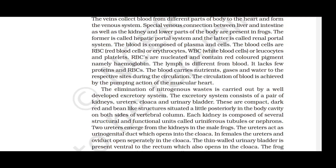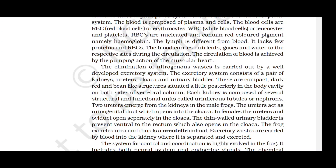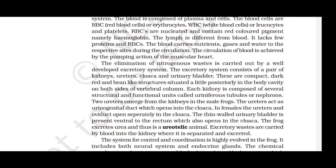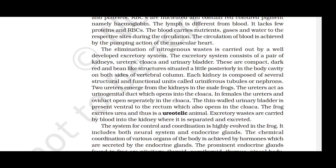The blood is composed of plasma and cells: RBCs (erythrocytes), WBCs (leukocytes) and platelets. RBCs are nucleated and contain hemoglobin. Lymph differs from blood — it lacks some proteins and RBCs. The excretory system consists of a pair of kidneys, ureters, cloaca and urinary bladder. The kidneys are compact, dark red, bean-like structures situated posteriorly in the body cavity on both sides of the vertebral column. Each kidney is composed of structural and functional units called uriniferous tubules or nephrons. In male frogs, the ureters act as urinogenital ducts opening into the cloaca; in females, ureters and oviducts open separately into the cloaca. Frogs are ureotelic.